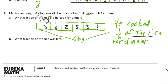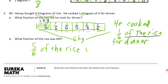What fraction of the rice was left? Well, it's like all the rest of it. So if this was what he cooked, then he's going to have one, two, three, four, five-sixths left. Five-sixths of the rice was left.